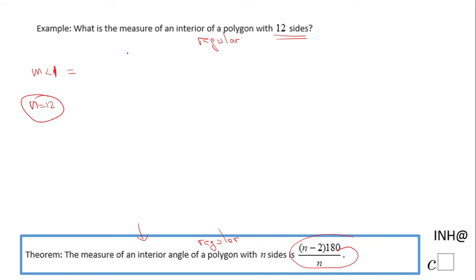So we're going to have (12 - 2) × 180 divided by 12. 12 minus 2 is 10 times 180 divided by 12. You have choices here. You may use a calculator if that is possible, or you can do some simplification.